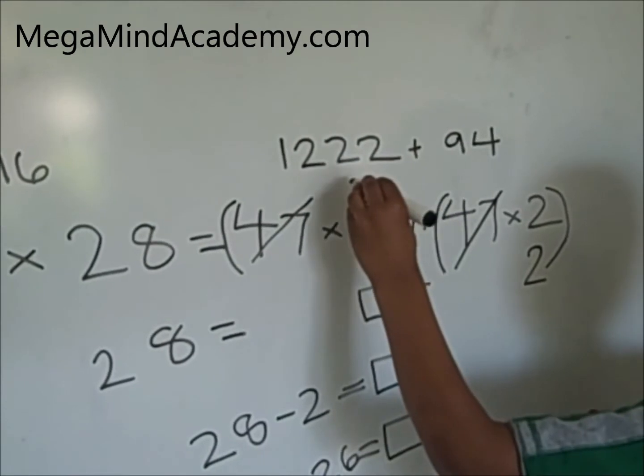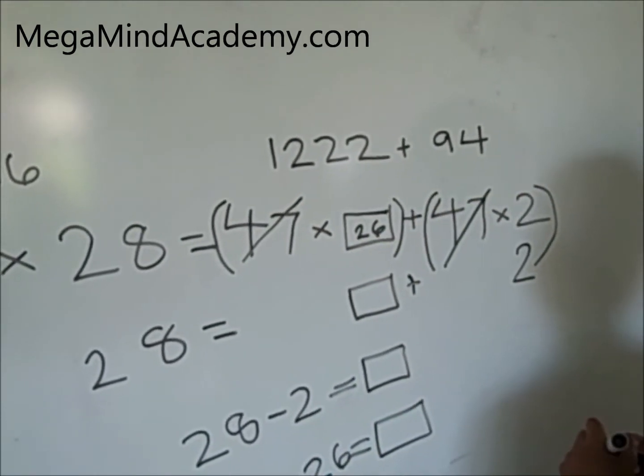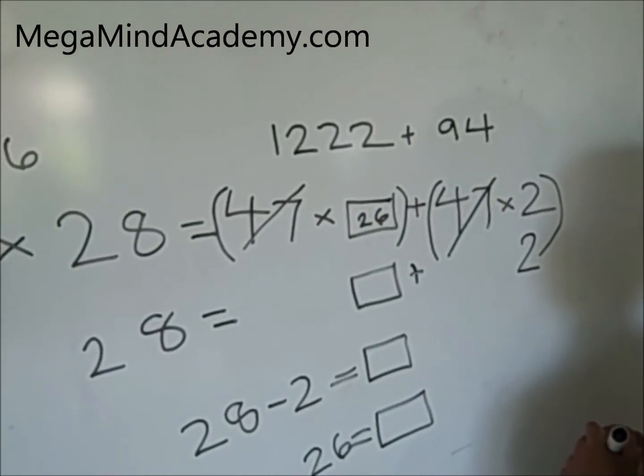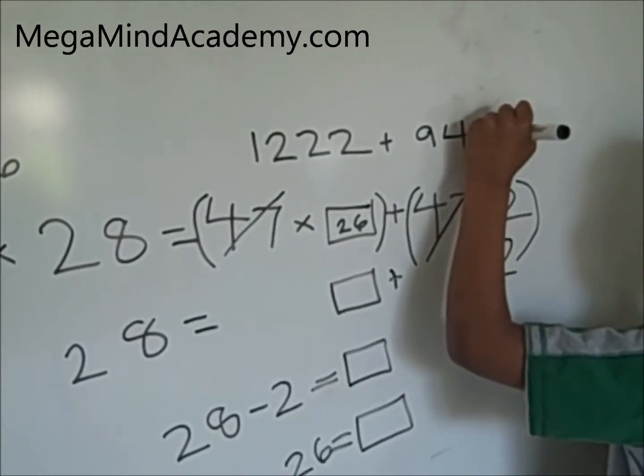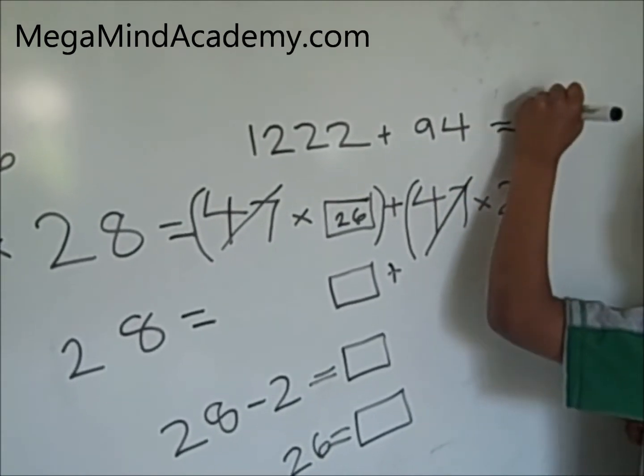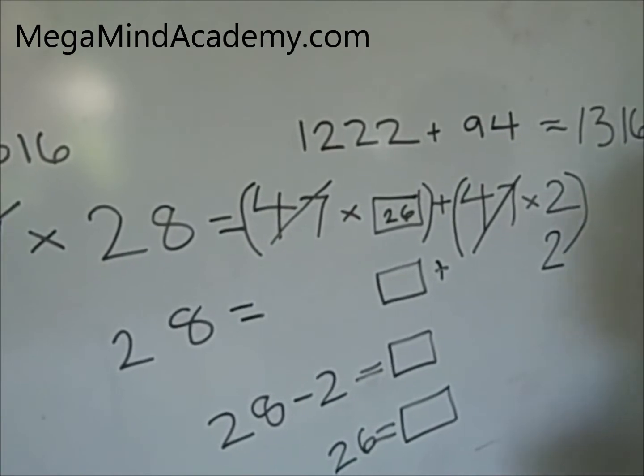Now 1,222 plus 94 equals 1,316. Bingo! It equals 1,316. Now let's do another equation.